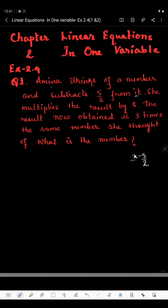She multiplies the result by 8 — that means after subtraction, whatever she gets, that result will be multiplied by 8, so the whole thing will be multiplied by 8. The result obtained will be 3 times the same number she thought of. Three times means 3 into X, so this will be our equation.